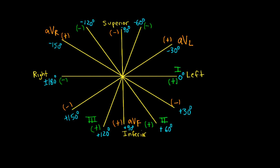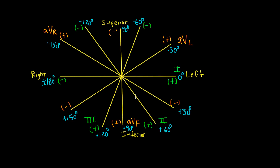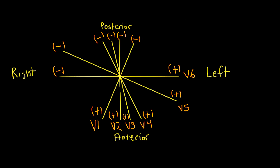Let's review the frontal plane — we have six extremity leads, and we're going to focus on leads 1 and AVL. Their positive poles are on the left and negative poles on the right. In the transverse plane, V1 and V2 are our rightward anterior leads with their positive poles there, and V5 and V6 are our leftward, somewhat posterior leads with their positive poles on that side.